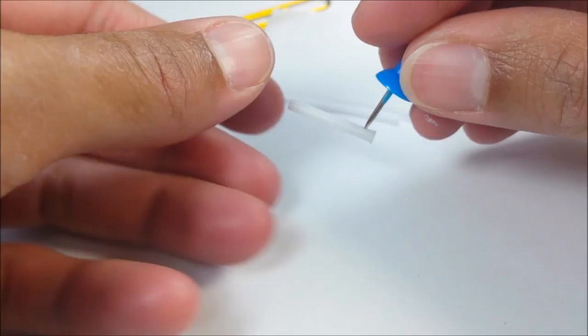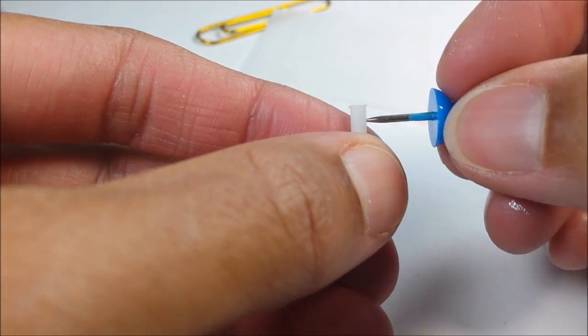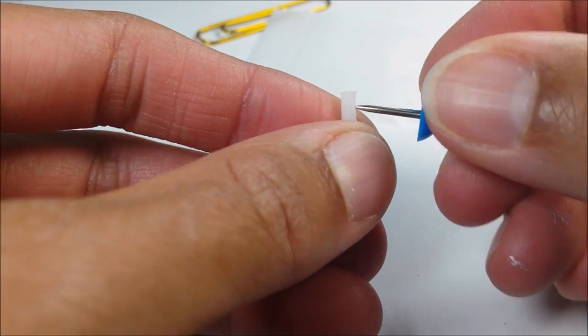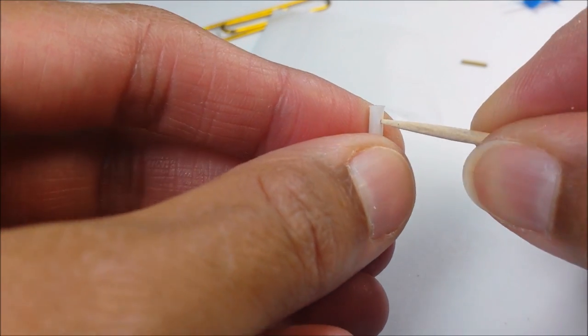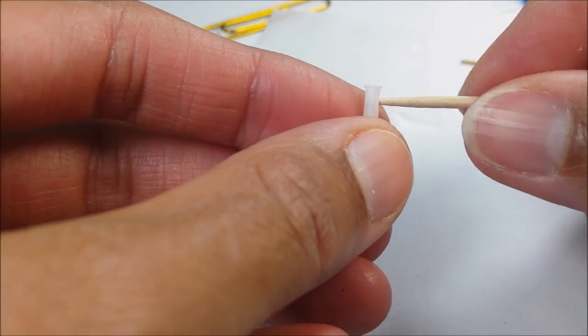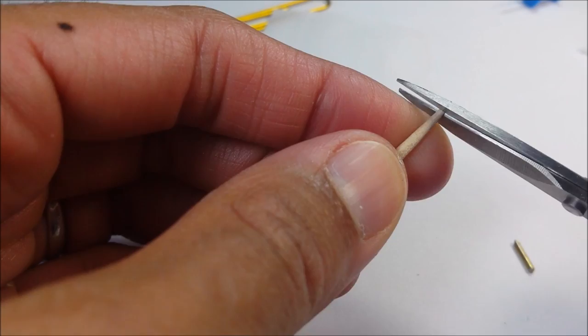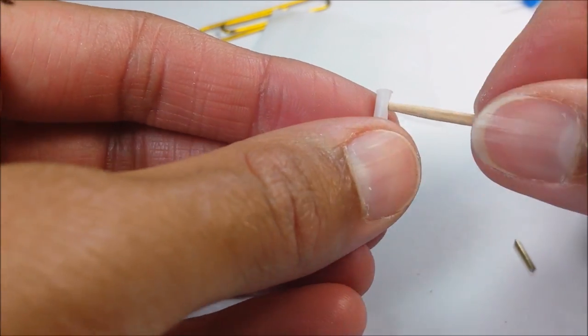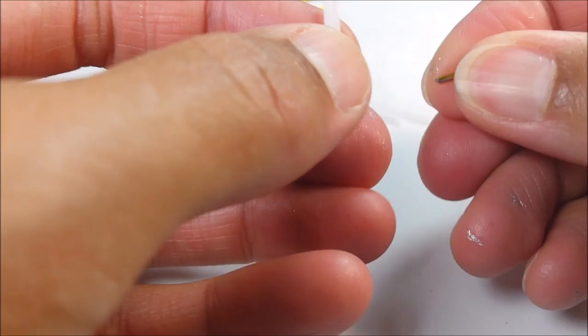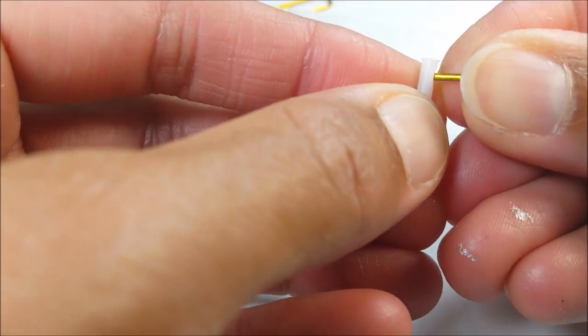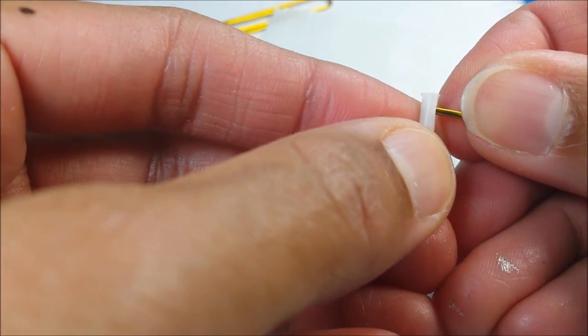Then I poke a hole with my thumbtack towards the top of my Q-tip. And I use a toothpick to expand the hole. And I can also just cut off the tip of my toothpick to make that hole even bigger, so that my paper clip piece will fit inside. I glue it inside.